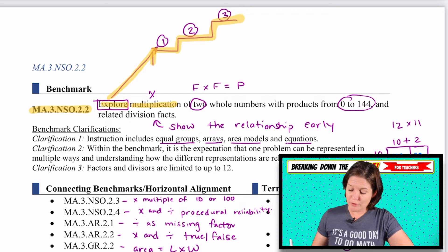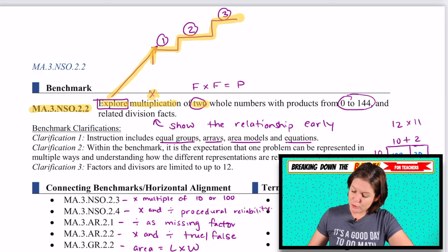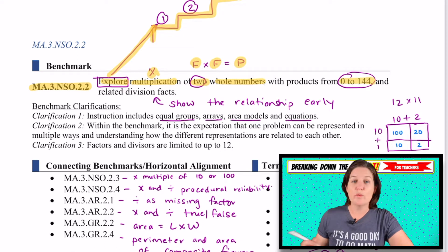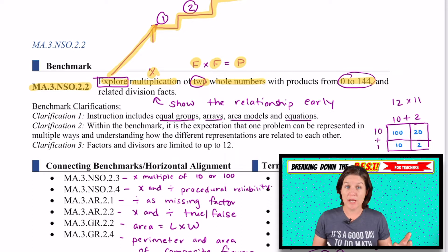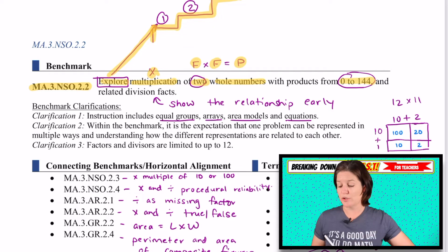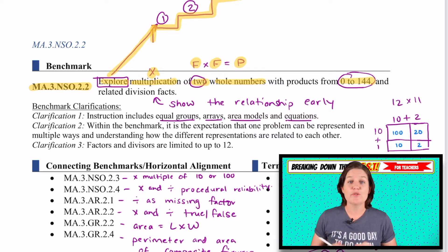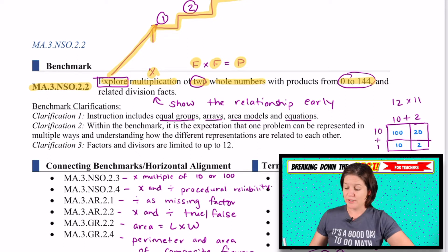So explore multiplication of two whole numbers. Up here I put factor times factor equals product, just to get some vocabulary in there, with products from zero to 144 — basically from zero times zero equals zero to 12 times 12 equals 144. This is different than before with the common core standards in Florida, because it only went up to a 10 by 10, which was a product of 100.